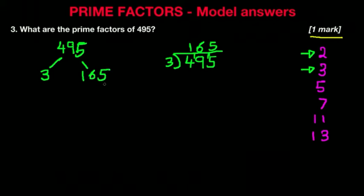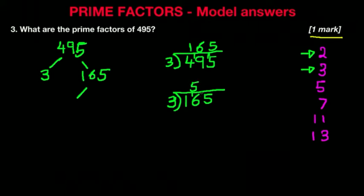Now the number 165 — can that be divided by 2? No, because it's an odd number. Can it be divided by 3? 165 divided by 3: 3s into 1 is 0, carry the 1. 3s into 16 is 5, remainder 1. 3s into 15 is 5. There are no remainders, so 165 can be divided by 3, and we are left with 55.